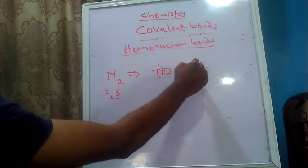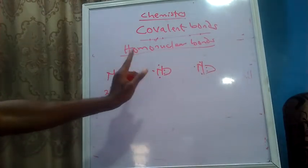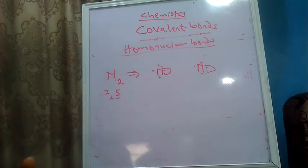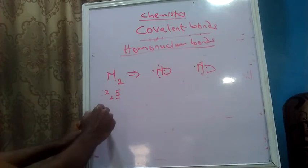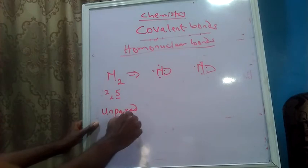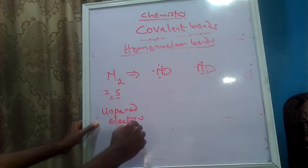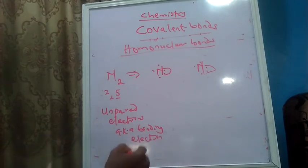A prerequisite for understanding this topic is electron configuration and valence electrons. The Lewis dot structure for nitrogen will be 1, 2, 3, 4, 5 — meaning it has one paired electron and three unpaired electrons. The three unpaired electrons will try to form a bond with another atom. Remember, they are unpaired so they want to form a bond. Another name for unpaired electrons is bonding electrons — the electrons that want to form a bond so that they can be stable.